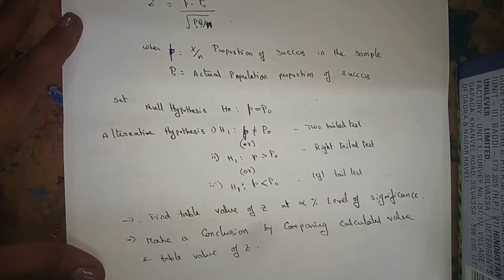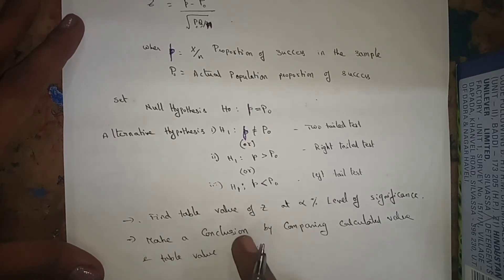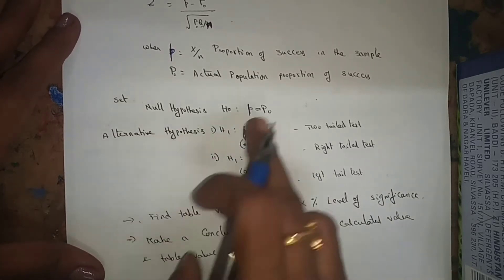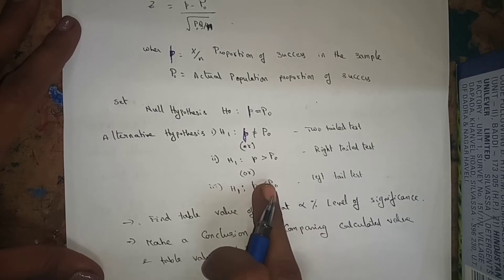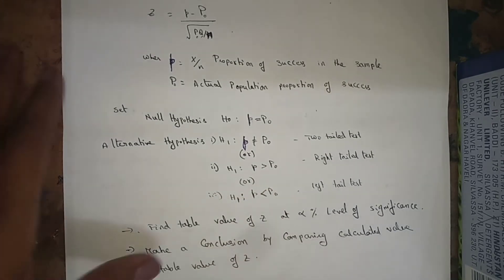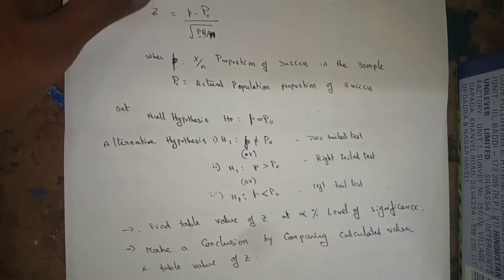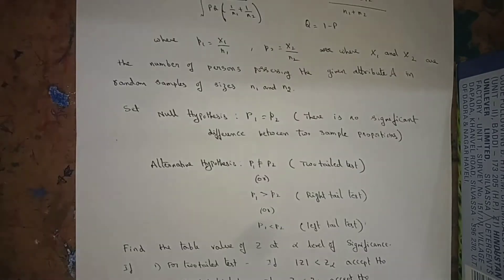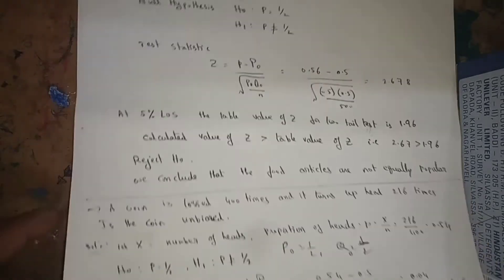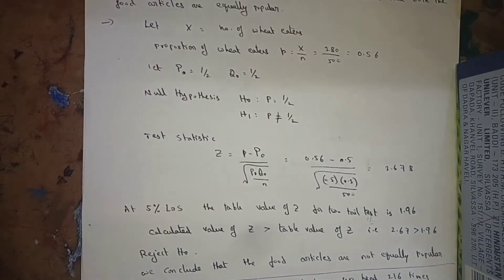We find the table value of z at the given level of significance — typically 5% or 1% — and make a conclusion by comparing the calculated value and tabular value of z.